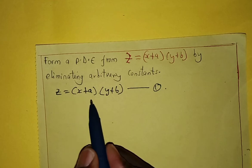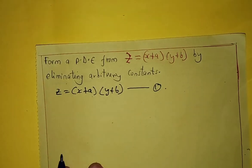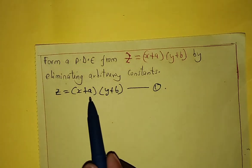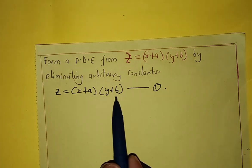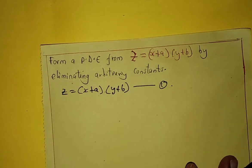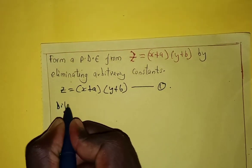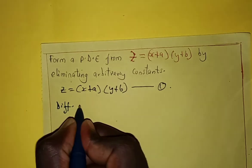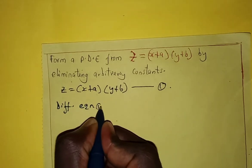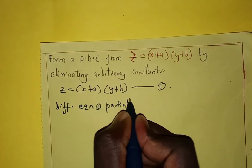This equation has a and b as our constants. We have to eliminate these two constants in order to form our partial differential equation. The first step here, we differentiate equation 1 partially with respect to x.